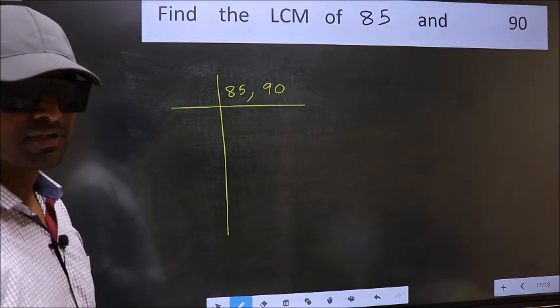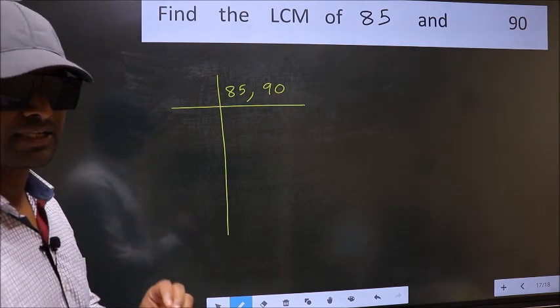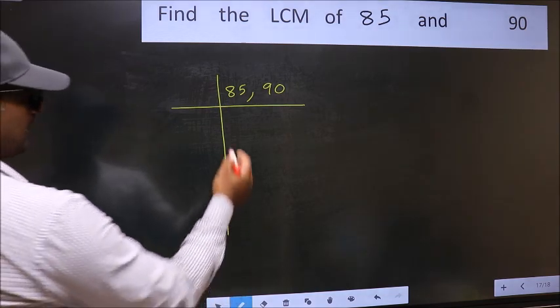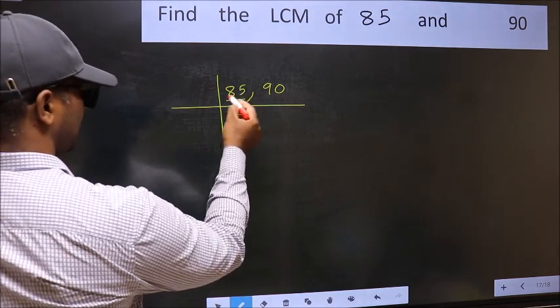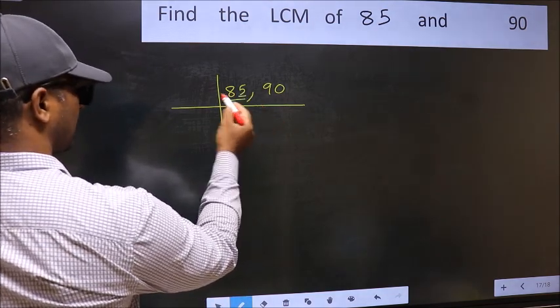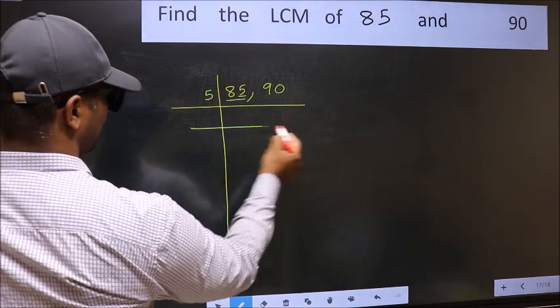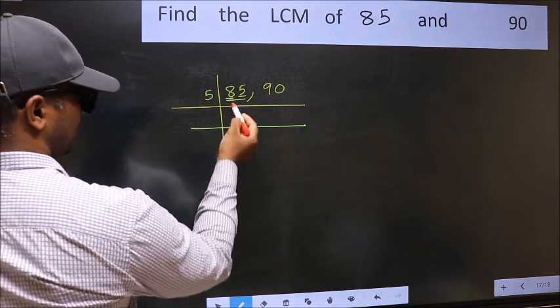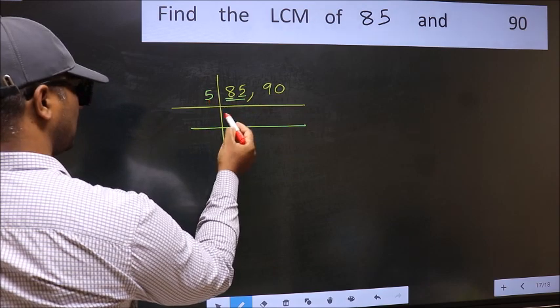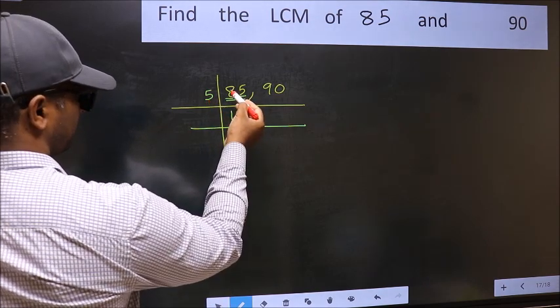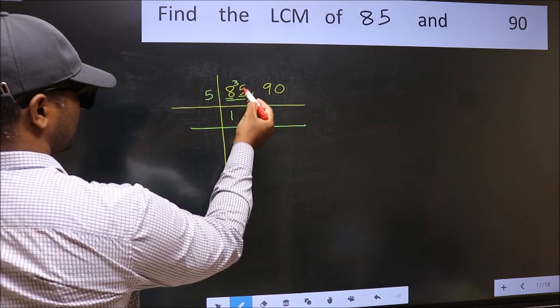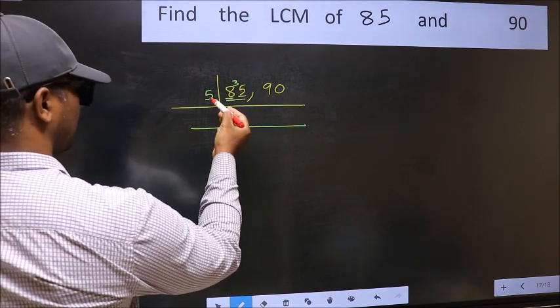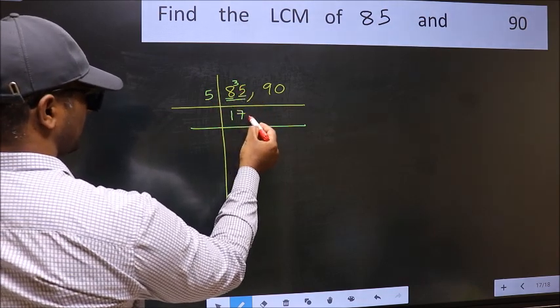Now you should focus on the first number which is 85 here. In this number, last digit 5, so take 5. First number 8. A number close to 8 in 5 table is 5 once 5. 8 minus 5, 3, carried forward 35. When do we get 35 in 5 table? 5 times 7 is 35.